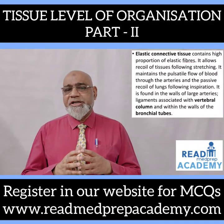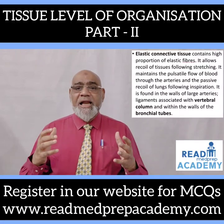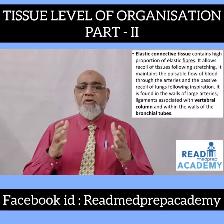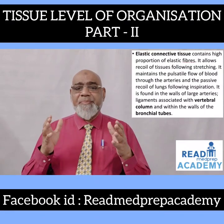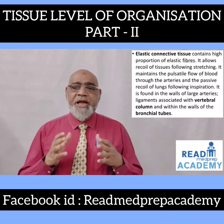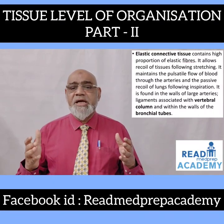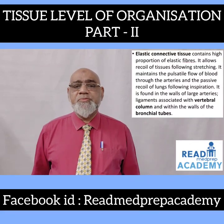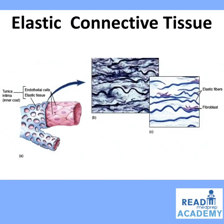Elastic connective tissue contains a high proportion of elastic fibers. It allows recoil of tissues following stretching, maintains the pulsatile flow of blood through the arteries, and allows passive recoil of lungs following inspiration. It is found in the walls of large arteries, ligaments associated with the vertebral column, and within the walls of the bronchial tubes. The image shows a blood vessel with tunica intima made up of endothelial cells and elastic fibers in a wavy pattern, with fibroblasts embedded between them.